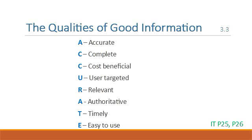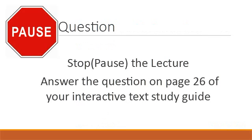The qualities of good information can be remembered using the mnemonic acronym ACCURATE: Accurate, Complete, Cost-beneficial, User-targeted, Relevant, Authoritative, Timely, Easy to use. Stop the lecture. Answer the question on page 26 of your Interactive Text Study Guide.